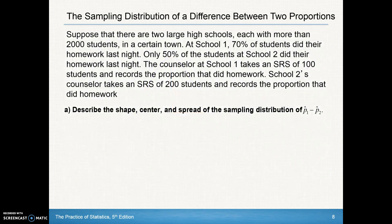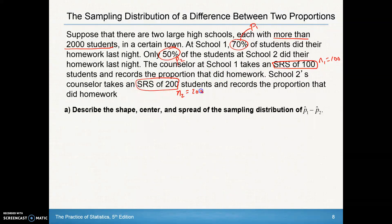Suppose that there are two large high schools, each with more than 2,000 students. At School 1, 70%—there's our P1—students did their homework last night. Only 50% of students at School 2—there's our P2—did their homework last night. School 1 takes an SRS of 100, and School 2 has a simple random sample of 200.